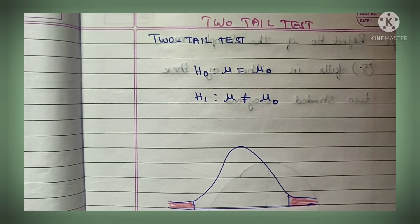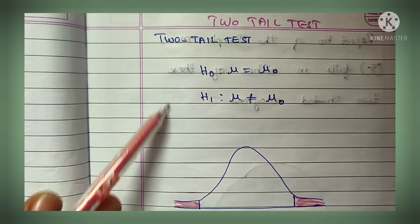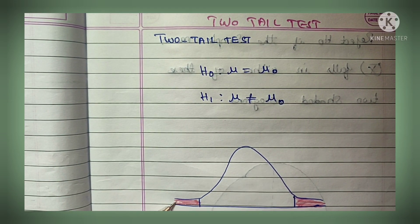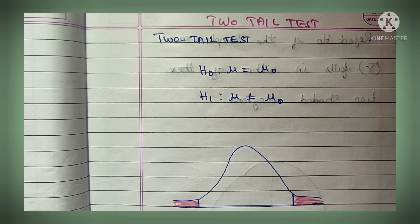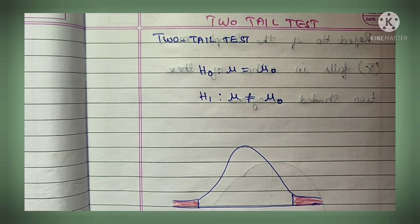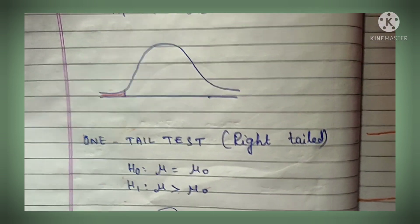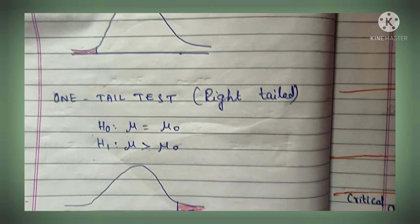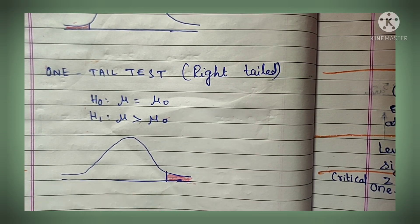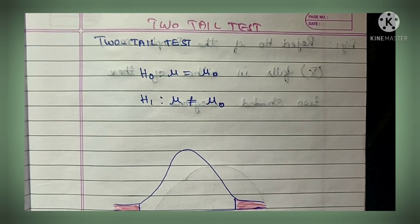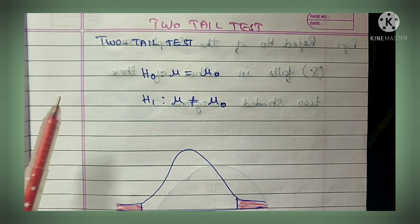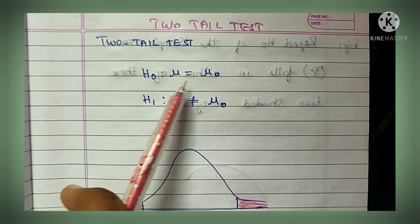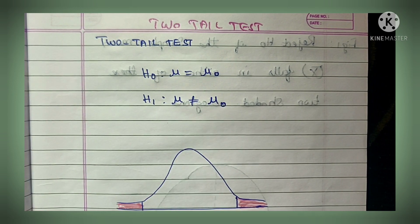Moving on to the two-tail test. In a two-tail test, the values can be either in the left direction or in the right direction. In a one-tail left test the critical value is in the left shaded portion; in a right-tail test it is on the right. In a two-tail test, the critical values can be on either side. For the two-tail test: H0: μ = μ0 and H1: μ ≠ μ0.